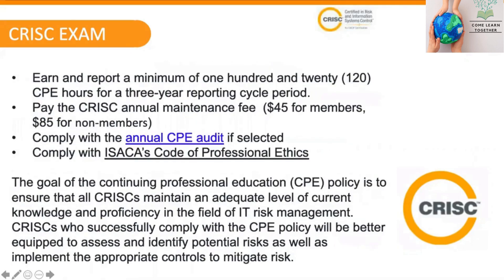You must earn 120 CPE hours over three years, which is 20 hours per year, and pay a maintenance fee of $45 for members or $85 for non-members annually. You must comply with the annual CPE audit if selected, where ISACA will either approve or audit your CPE claims. Most importantly, you must comply with ISACA's code of professional ethics to maintain the CRISC certification.